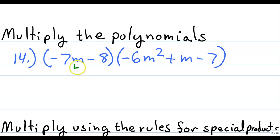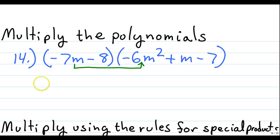So we'll take this negative 7m and distribute it to the first term. We have negative 7m times negative 6m squared. Negative 7 times negative 6 gives us positive 42, and m to the first plus m to the second gives us m to the third.